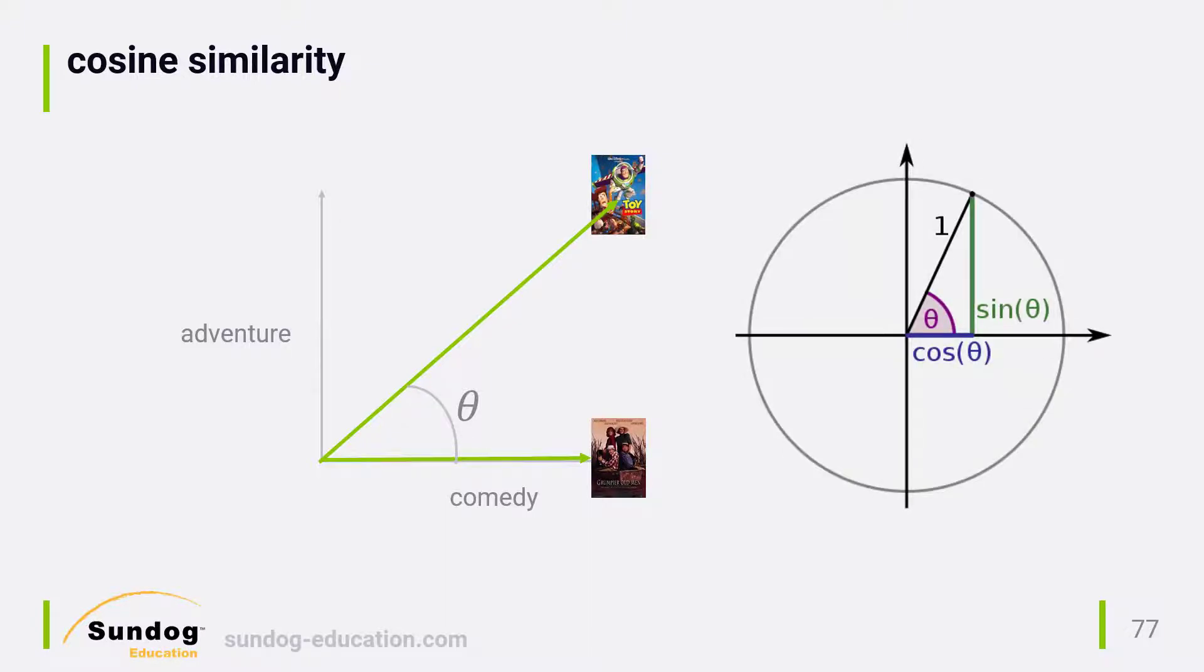Remember, the cosine of an angle works like this. As theta approaches 90 degrees, it will become 0, and as it approaches 0 degrees, it becomes 1. The cosine of 45 degrees is about 0.7, so we could say that the cosine similarity score between Toy Story and Grumpy Old Men is 0.7, based on them both sharing a genre of comedy.